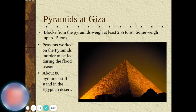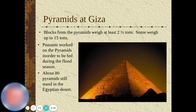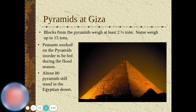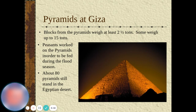Blocks from pyramids weigh at least two and a half tons, and some weigh up to 15 tons. Peasants worked on the pyramids in order to be fed during the flood season. 80 pyramids still stand in the Egyptian desert. These took many years to build. Slaves and peasants would build them, and some workers would die from working too hard or from injuries. If you didn't work, you didn't get fed.